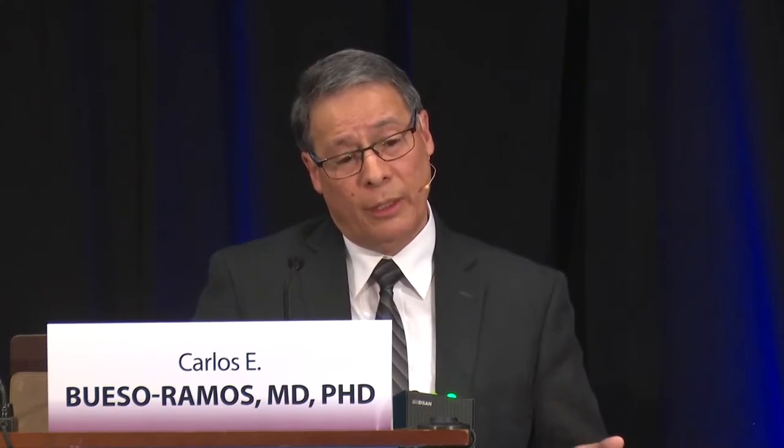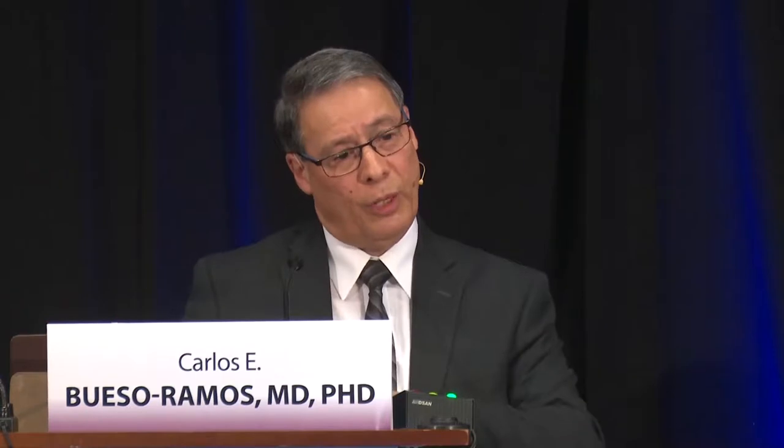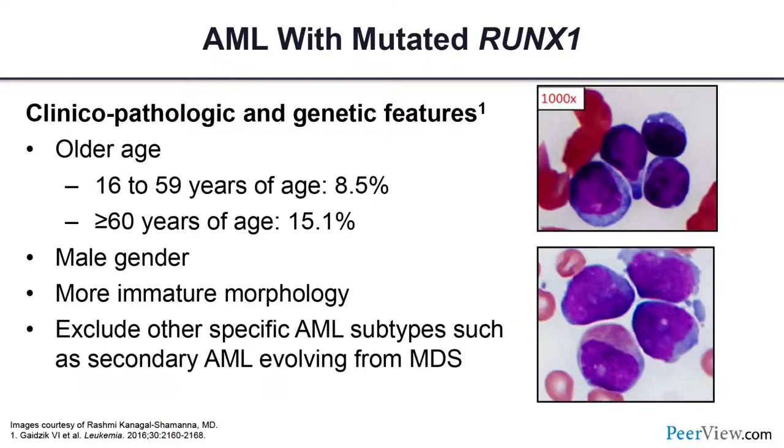That patient was treated with a combination regimen and is doing great. Regarding AML with mutated RUNX1, the WHO recommends using this category for diploid de novo cases after excluding secondary AMLs evolving from MDS. They ask you to keep this group clean until we better understand it. These cases tend to be older, male-predominant, with immature morphology, and data is being published supporting this.